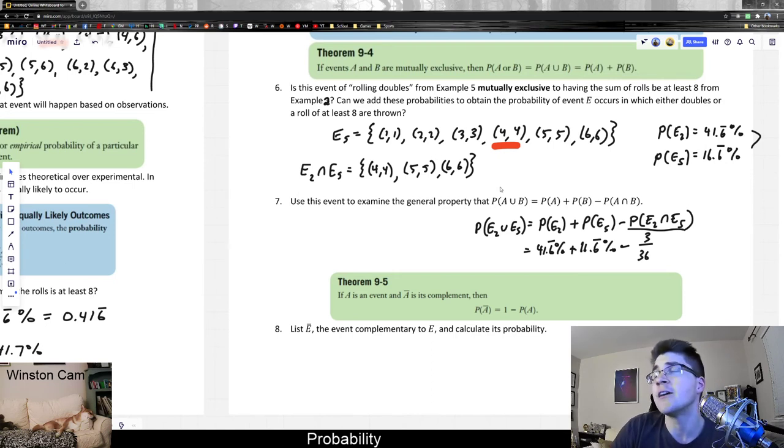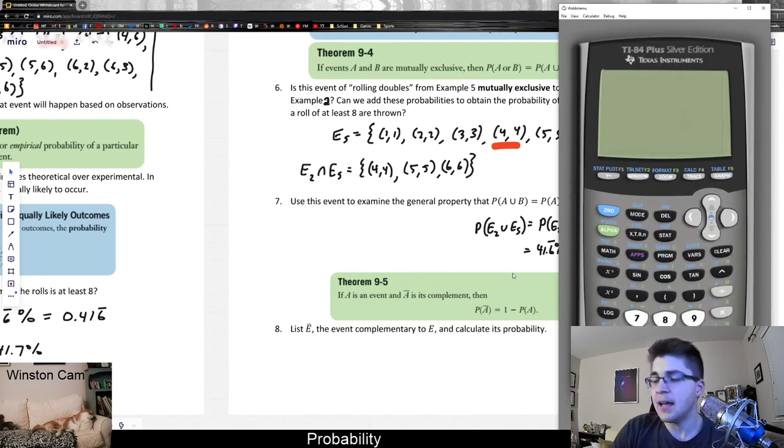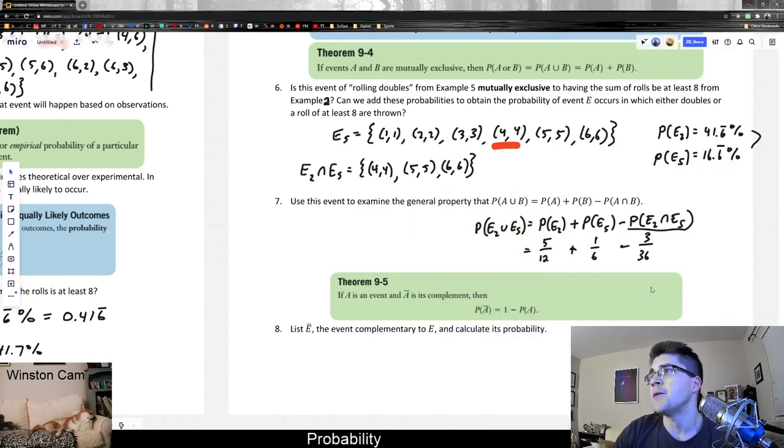So if we go ahead and do that, maybe it would have been wiser for me to leave those in their original fraction forms. So let's go ahead and rewrite it. Probability of E2 we simplify to be 5 twelfths, and probability of E5 we simplify to be 1 sixth. And if we simplify 3 out of 36, that will give us 1 twelfth, the probability that we will either get 4s, 2 4s, 2 5s, or 2 6s.